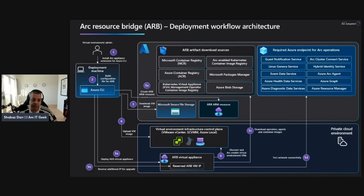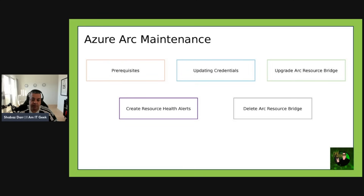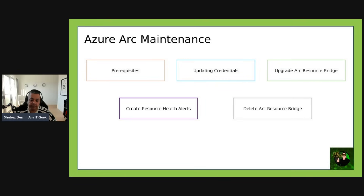Now let's talk about Azure Arc maintenance. To keep your Azure Arc resource bridge deployment online and operational, you need to perform maintenance operations such as updating credentials, monitoring upgrades, and ensuring the appliance VM is online. The appliance configuration files generated during deployment need to be saved in a secure location and made available on the management machine. These YAML configuration files are used for two key CLI commands: `az arcappliance delete` to delete the resource bridge, and `az arcappliance upgrade` to manually upgrade it.